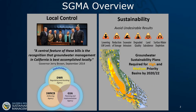Sustainability is defined as the avoidance of locally defined undesirable results for six sustainability indicators: lowering of groundwater levels, reduction of storage, seawater intrusion, degraded water quality, land subsidence, and depletion of interconnected surface water.